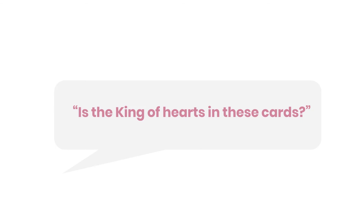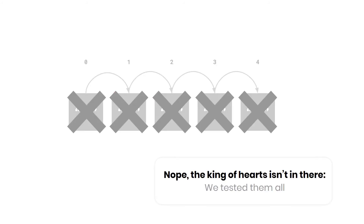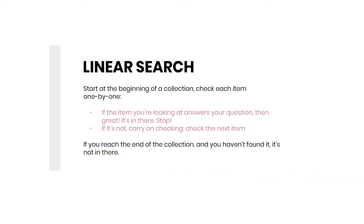Now let's consider when we don't find a result. Is the king of hearts in these cards? Using the same array and a linear search — starting at the first slot, testing the value, moving on — we find the king of hearts isn't there. We went one by one through the entire array testing each value against king of hearts, reached the end, and found nothing. We exhausted all options, so we can definitively conclude the king of hearts is not in this array.